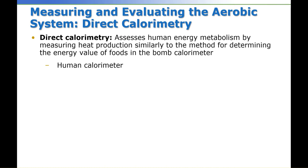Measuring and evaluating the aerobic system — direct calorimetry. Page 202 discusses direct calorimetry and indirect calorimetry. The bomb calorimeter explodes food and tells you its energy value. Another direct calorimeter assesses human energy metabolism by measuring heat production, similar to the method for determining the heat values of food in a bomb calorimeter.